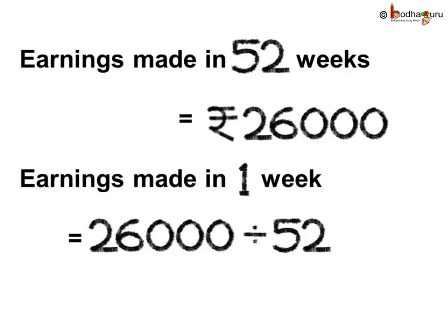Let us see what we need to find. Earnings made in 52 weeks is equal to 26,000 rupees. We need to find earnings made in 1 week. Since we need to find the earnings of 1 week, it means we need to divide 26,000 by 52.